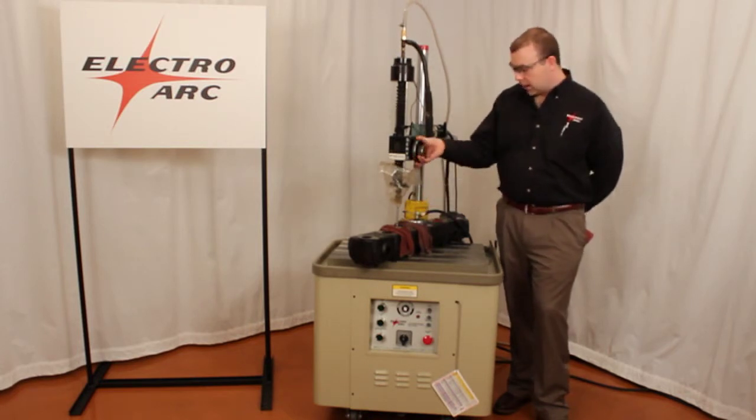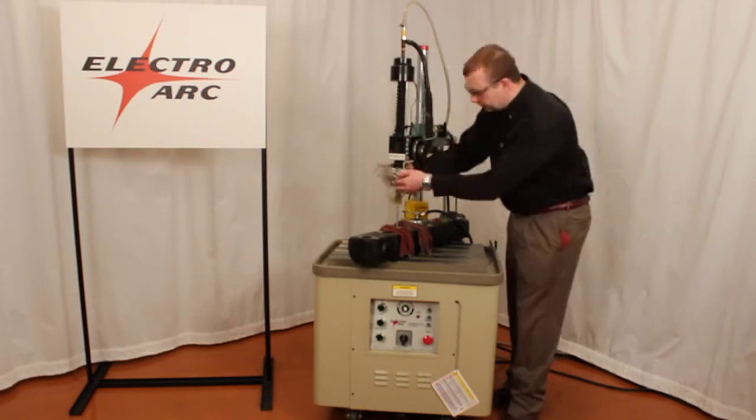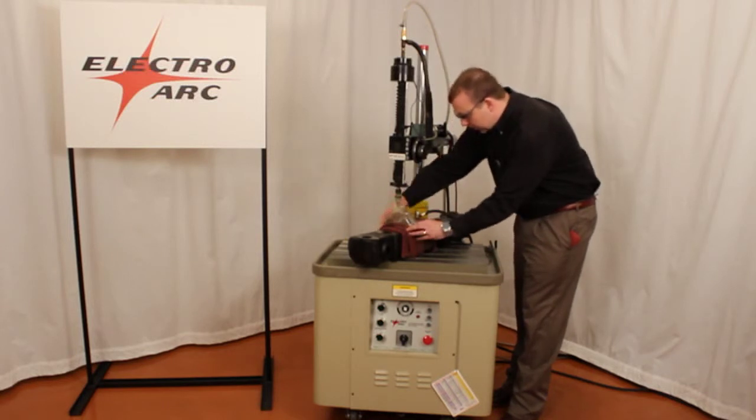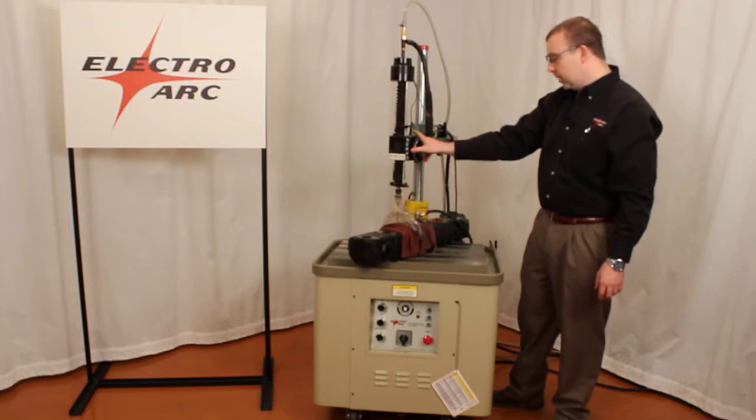To begin the process I simply bring my electrode down on top of my broken tool, drop my splash bag, cover the edges with a rag, and using the remote start stop, I can begin the process.